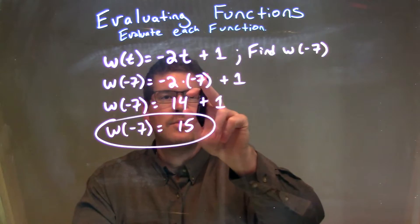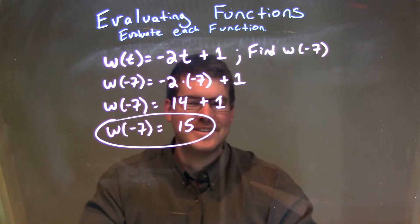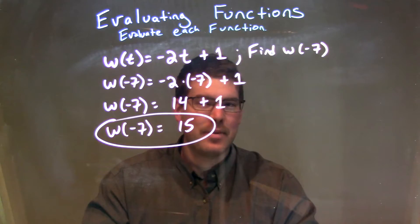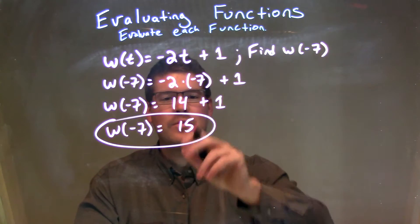Let's simplify. Negative 2 times a negative 7 is a positive 14. Negative times a negative is a positive. We brought down the 1. 14 plus 1 is 15.